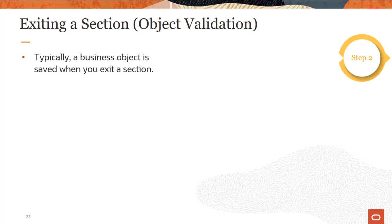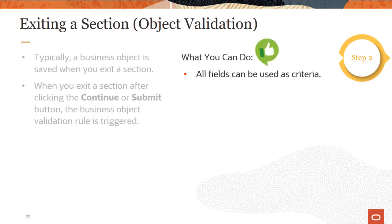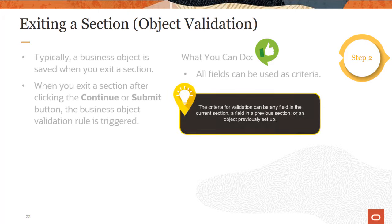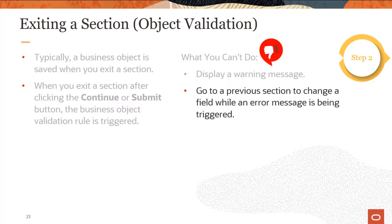In most cases, a business object is saved when you exit a section. The business object validation rule is triggered when you exit a section after clicking the Continue or Submit button. This rule is preferred to field validation because all fields relevant to the validation rule can be used as criteria to determine if an error has been made. In field validation, you cannot be sure a user has entered values required for criteria. The criteria for validation can be any field in the current section, a field in a previous section, or an object previously set up. You cannot use fields as criteria from a section not yet navigated to. Therefore, you can't display a warning message in this type of rule. If a value in a previous section needs to be changed, the field in the current section needs to be fixed before returning to the previous one; otherwise, the error message will keep appearing.